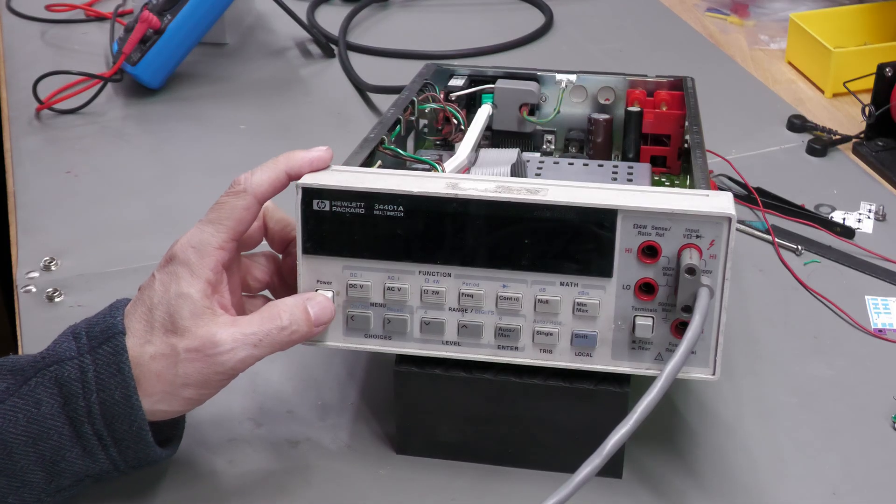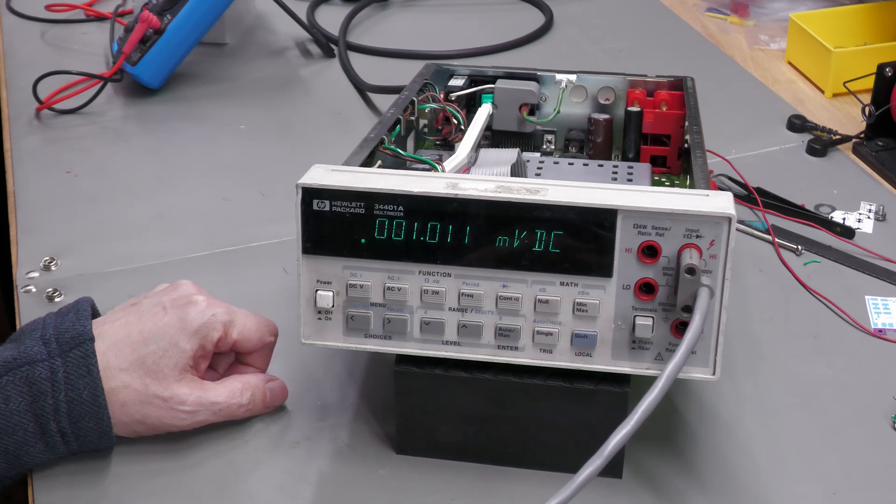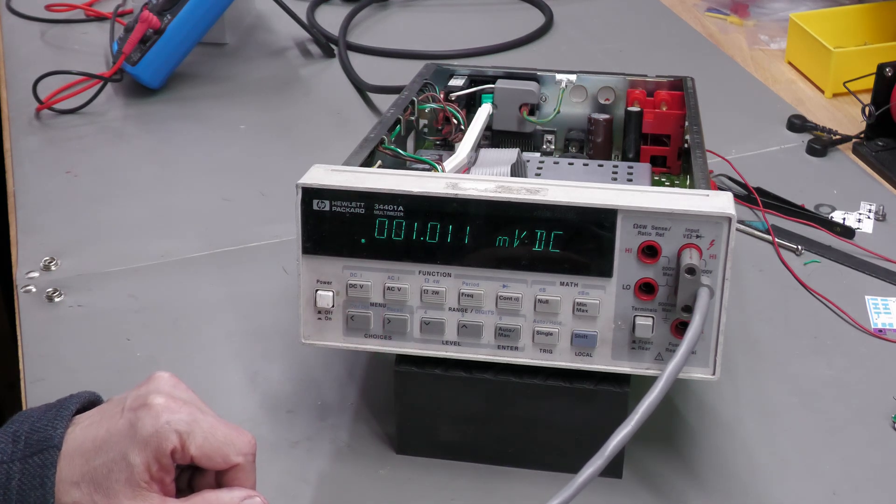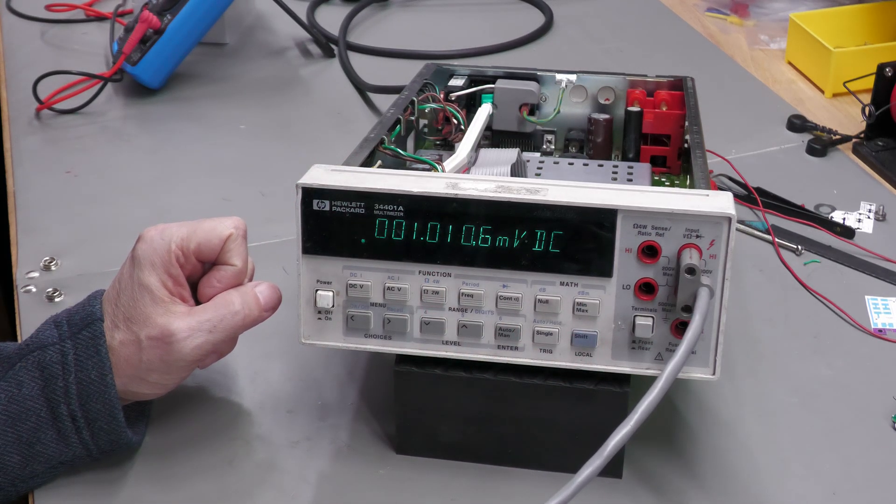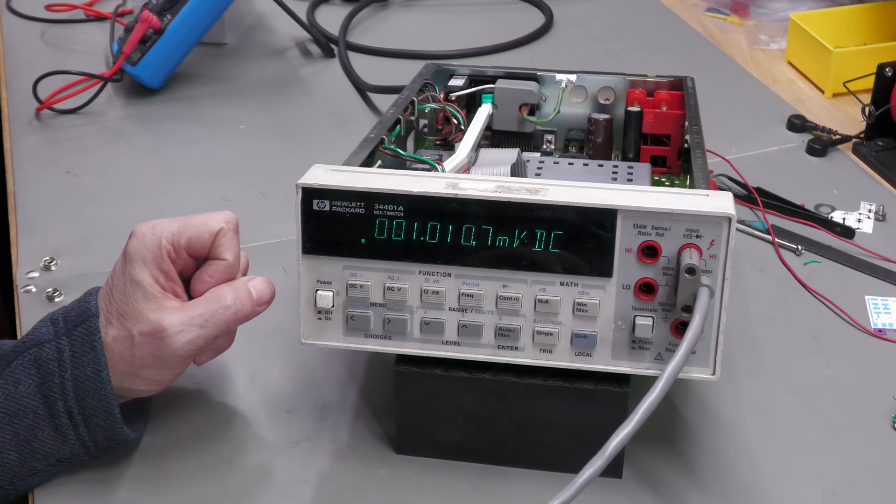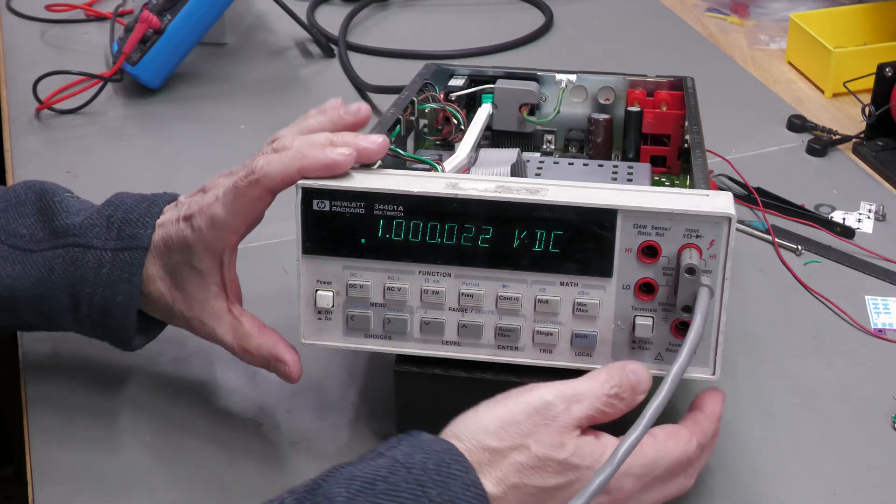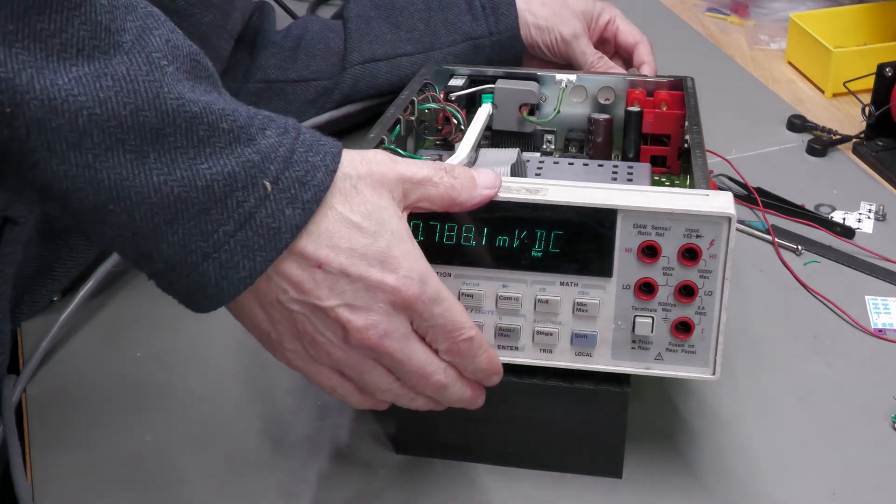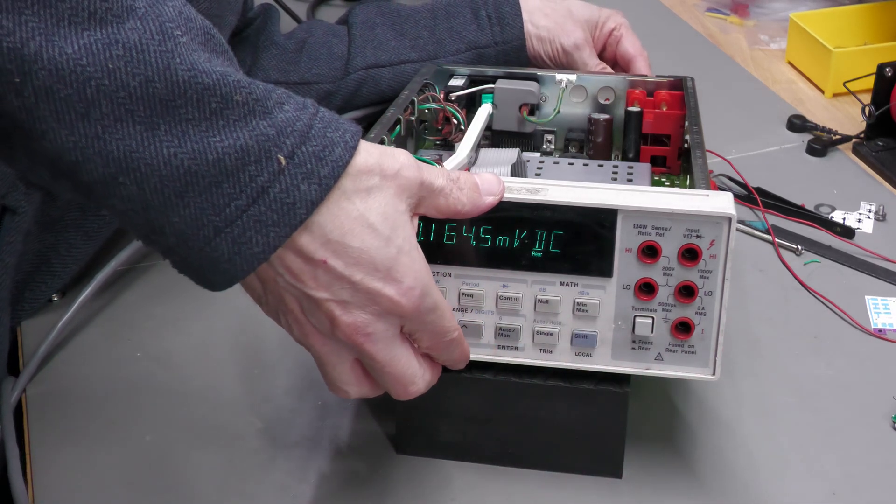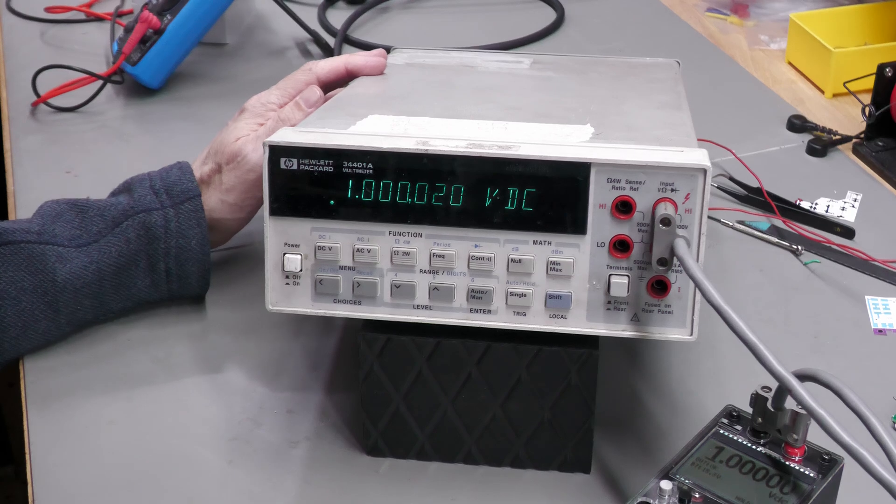Okay, let's switch it on again. I've got a one millivolt signal coming in. Just to check stability there, let me put it on six and a half digit mode. That's not too bad. Let me just go to one volt. I'm going to try the rear terminals this time. And yes, they're working as well.